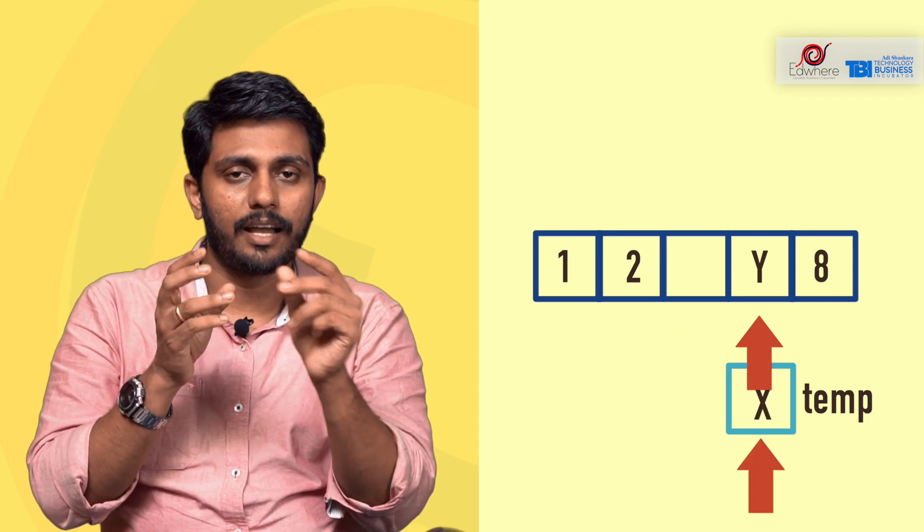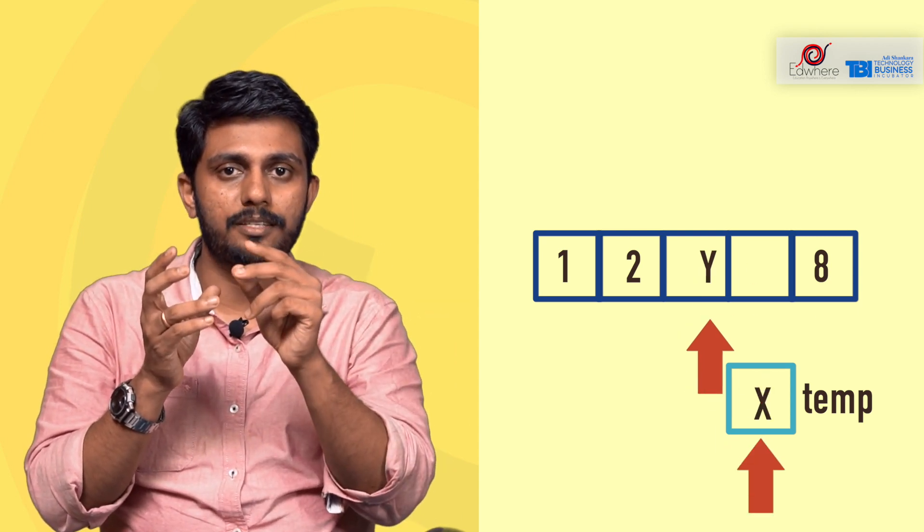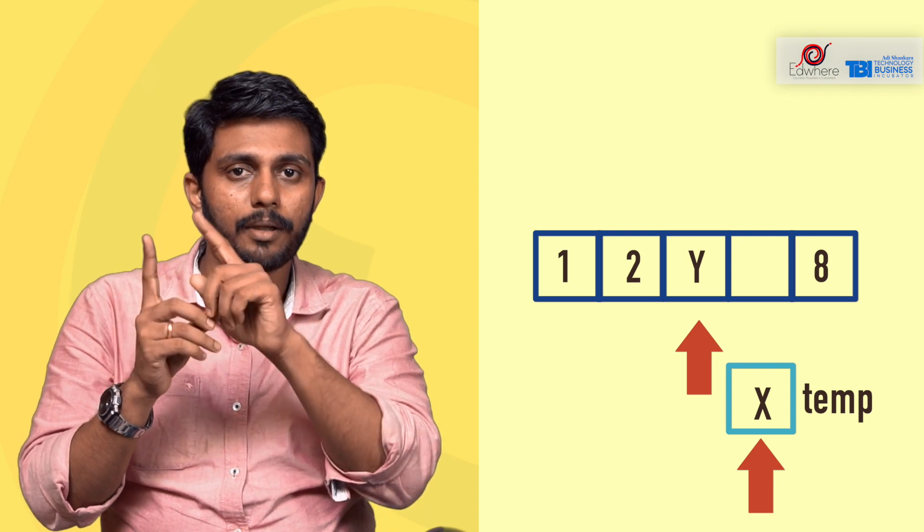This is how we do a swapping of 2 numbers. We have a temp variable. We store a value in temp, replace using temp, and complete the swap. We swap two variables using a temporary variable — that is the entire swapping process.